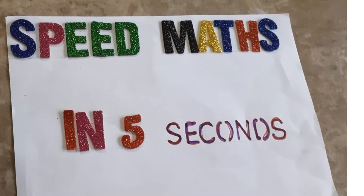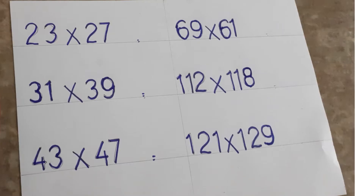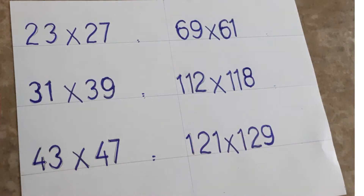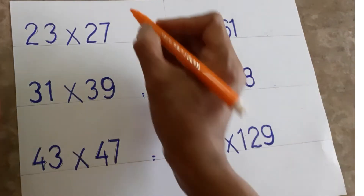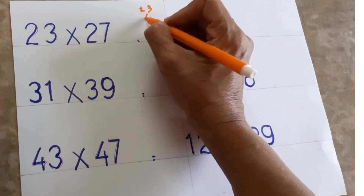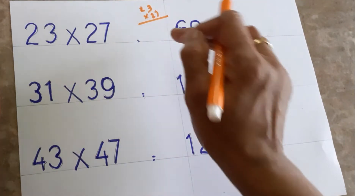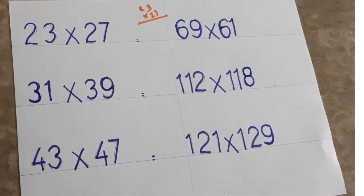Hello, welcome to Bharani. Today's topic is speed maths — multiplications you can do very fast within five seconds. I'll teach you some examples. For normal multiplication of 23 multiplied by 27, you multiply with 7, then with 2, then add — three steps. With this trick, you get the answer in one step only.